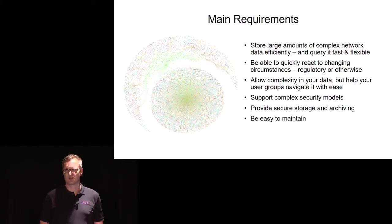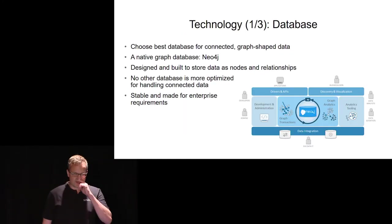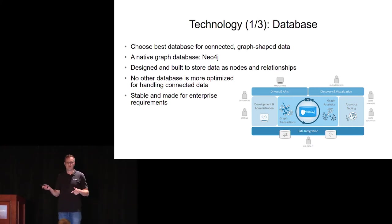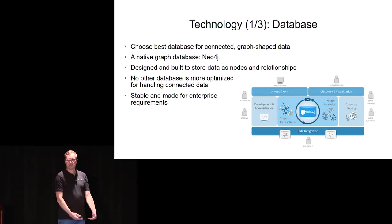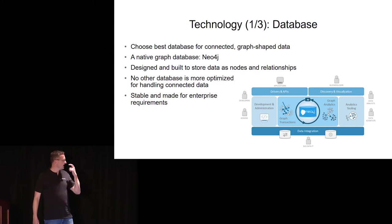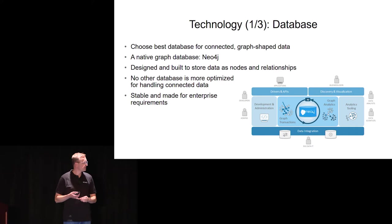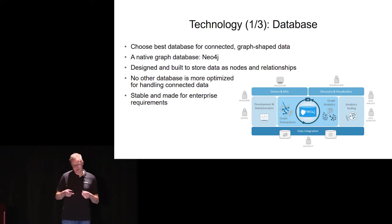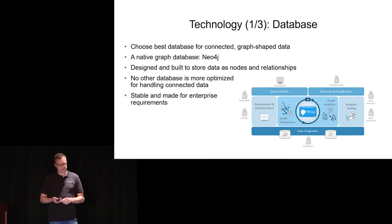Now I have ten minutes left to explain what Julian meant by these two products being the perfect fit. Technology decisions are always important because it's difficult to change your most basic layer — your database — once you've imported lots of data. So we chose the best database for connected, graph-shaped data. The decision is simple: the best native database is Neo4j — it's built and designed natively for graph data, no other database is optimized for this use case, and furthermore it's stable and great for enterprise requirements.